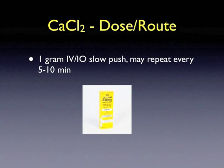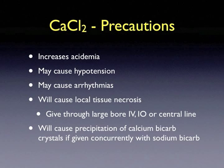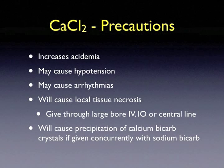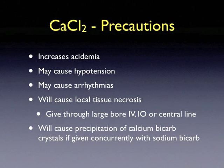The dose and route of administration of calcium chloride in cardiac arrest is a 1-gram intravenous or intraosseous slow push. This may be repeated every 5 to 10 minutes. The most significant precaution is local tissue necrosis; thus, this should only be given through a large-bore intravenous line, an intraosseous line, or a central line. Calcium chloride can increase acidemia, may cause hypotension, and may cause arrhythmia. It can also cause precipitation of calcium bicarbonate crystals if given concurrently with sodium bicarbonate.